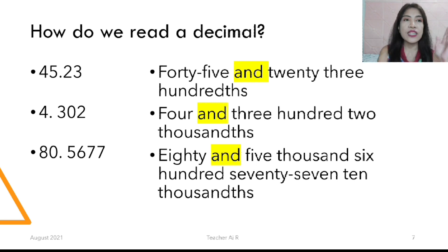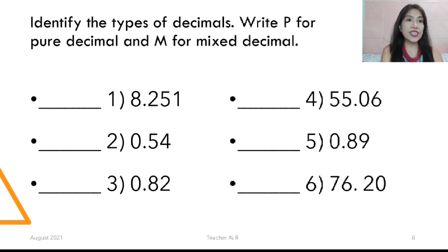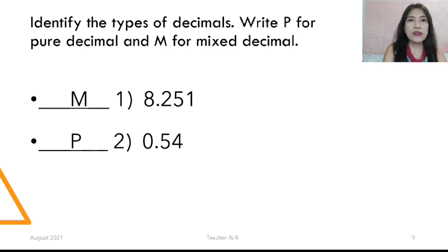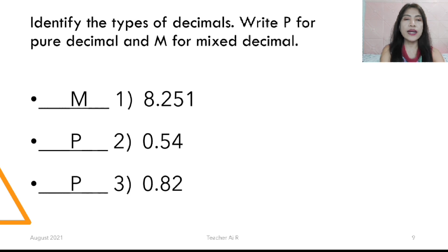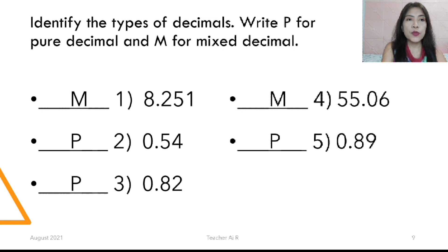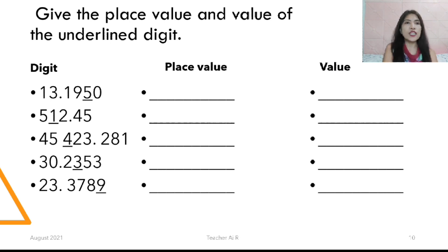Now identify the types of decimals: write P for pure decimals and M for mixed decimals. Try to answer numbers 1 through 6. Number 1 is M — it's mixed because there's a whole number. Number 2 is a pure decimal because there are only decimals. Number 3 is a pure decimal because there's no whole number. Number 4 is M because of 55, which is a whole number. Number 5 is pure because there's no whole number. Number 6 is M because there's a whole number.